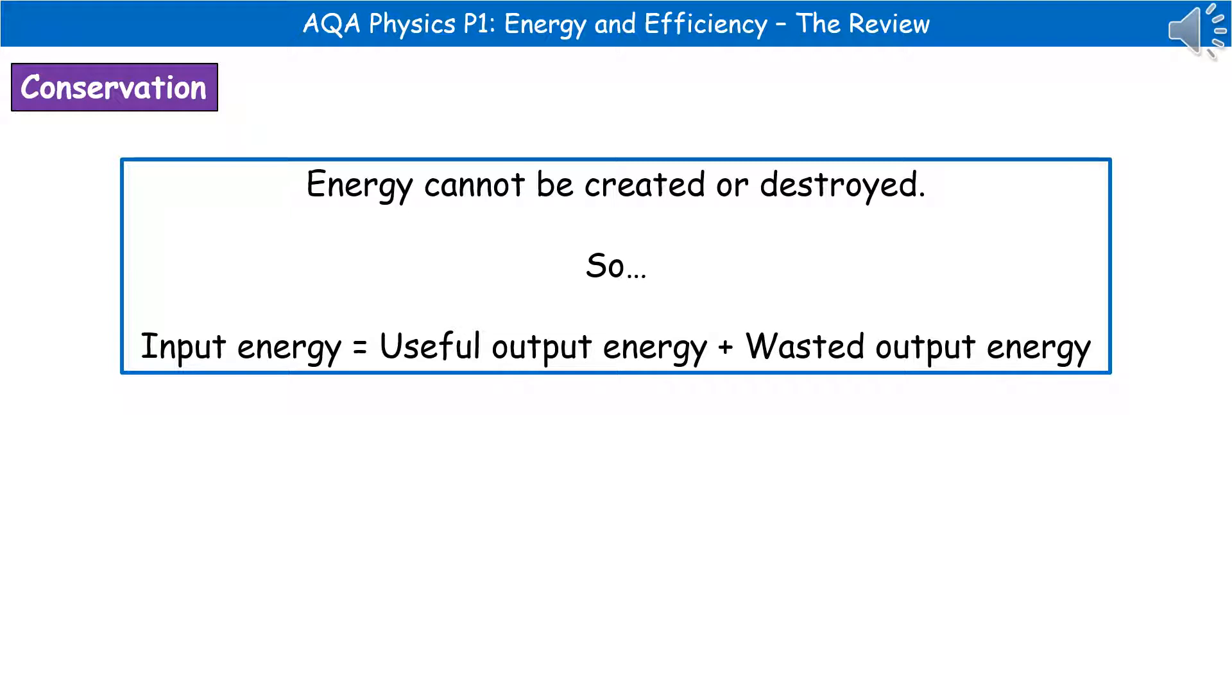If we think back to what we've looked at previously, we know that energy can't be created or destroyed. So that tells us that whatever the input energy is must equal the useful output energy plus the wasted output energy. So whatever we put in must come out.